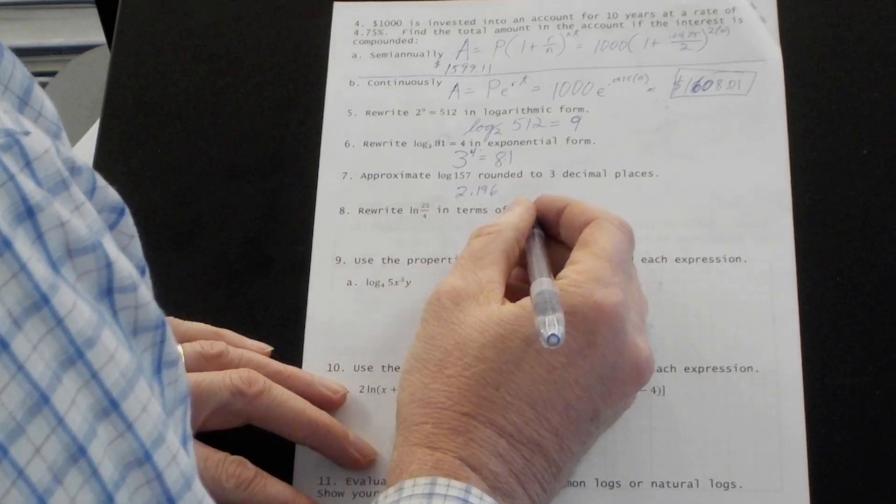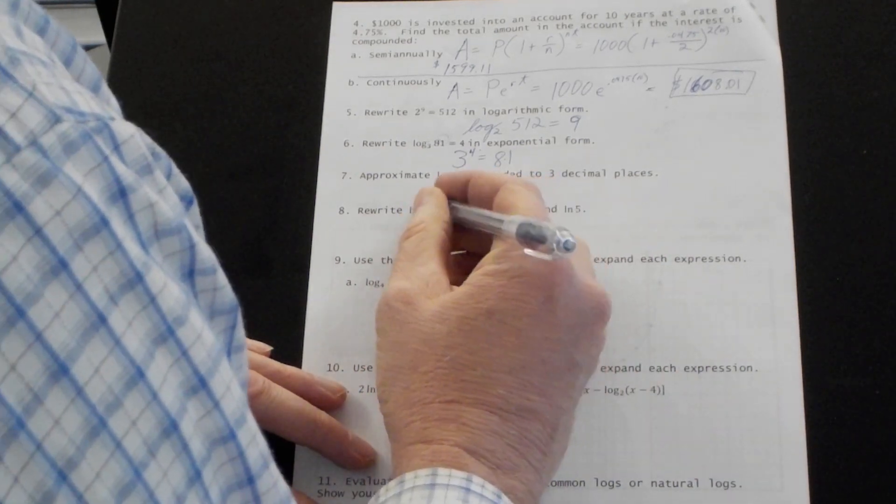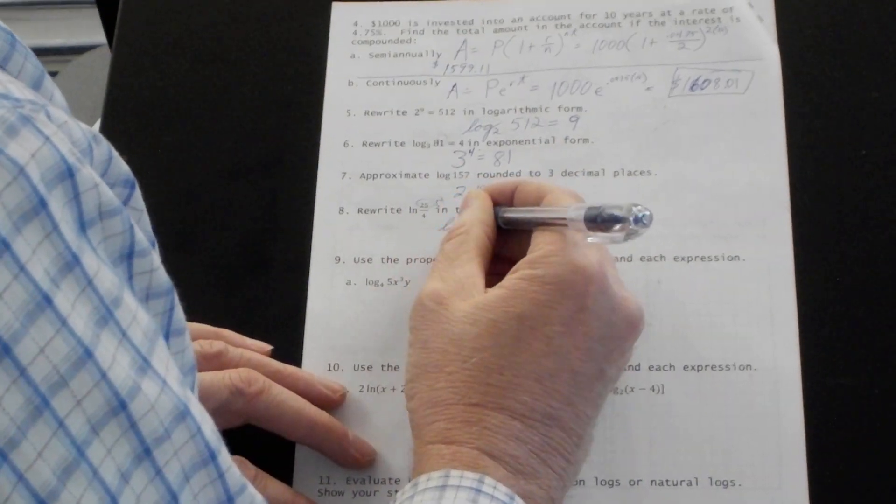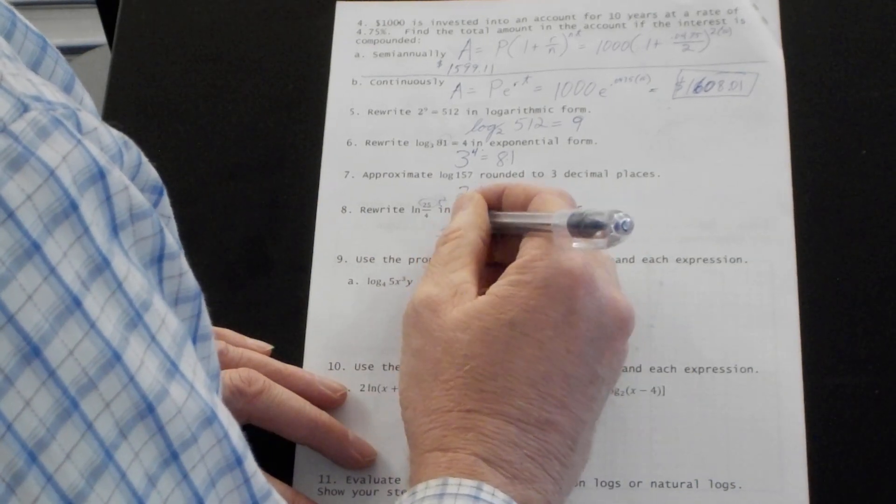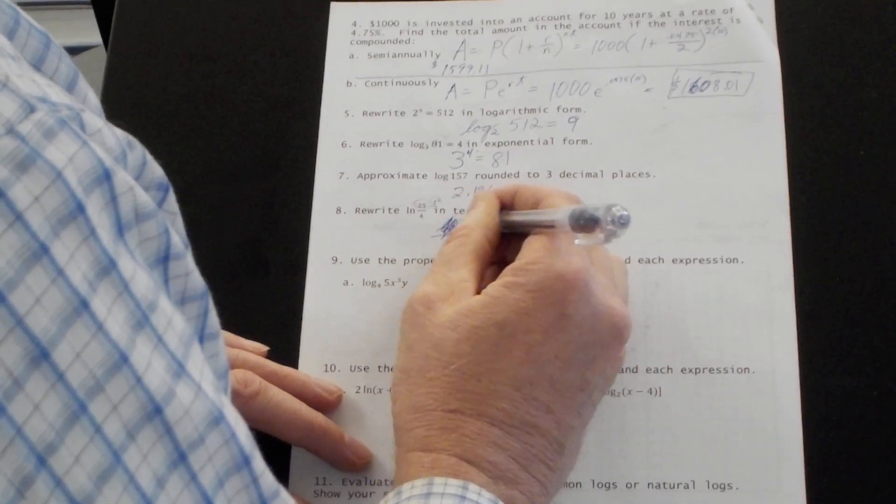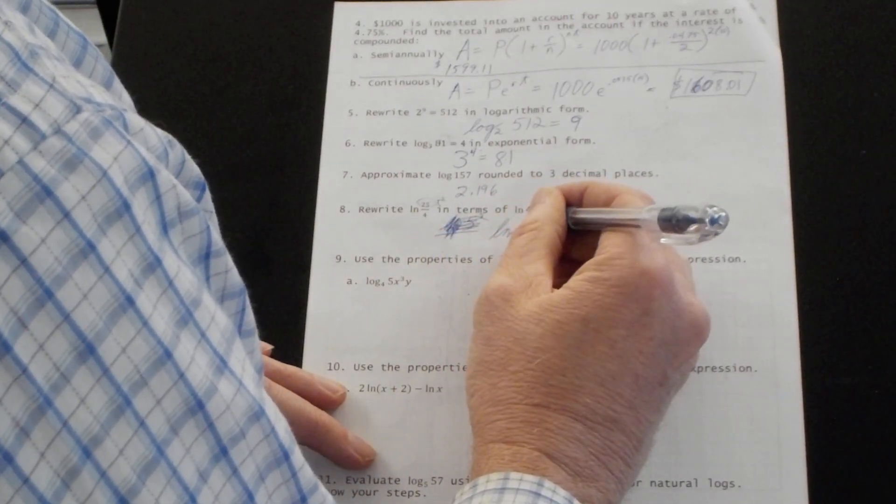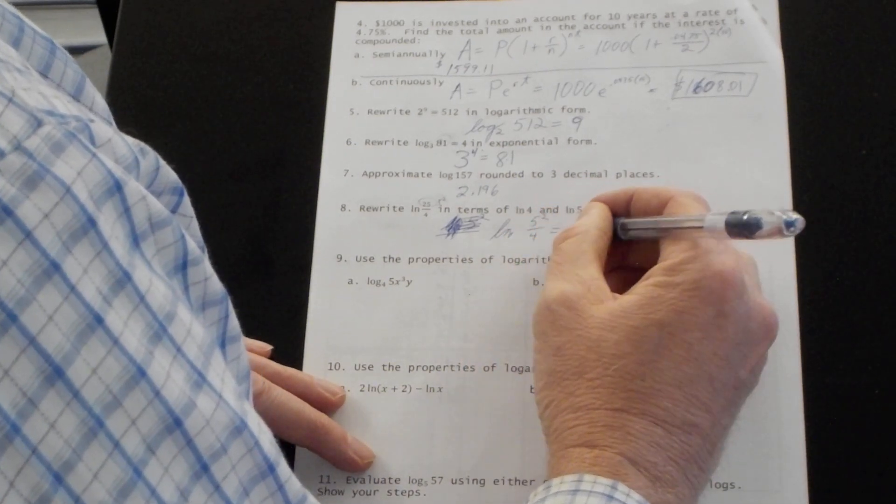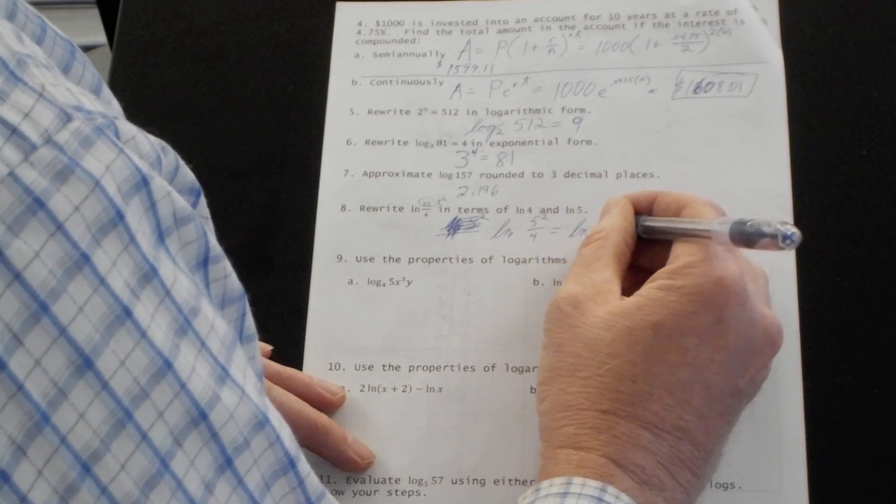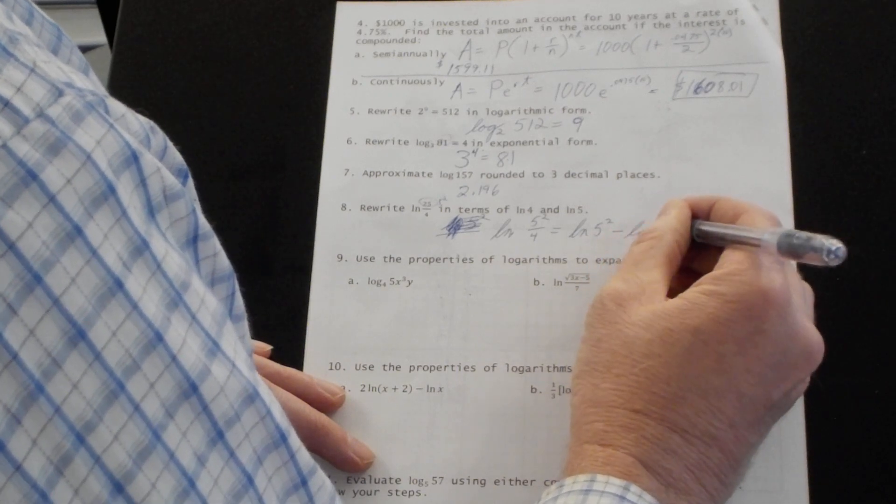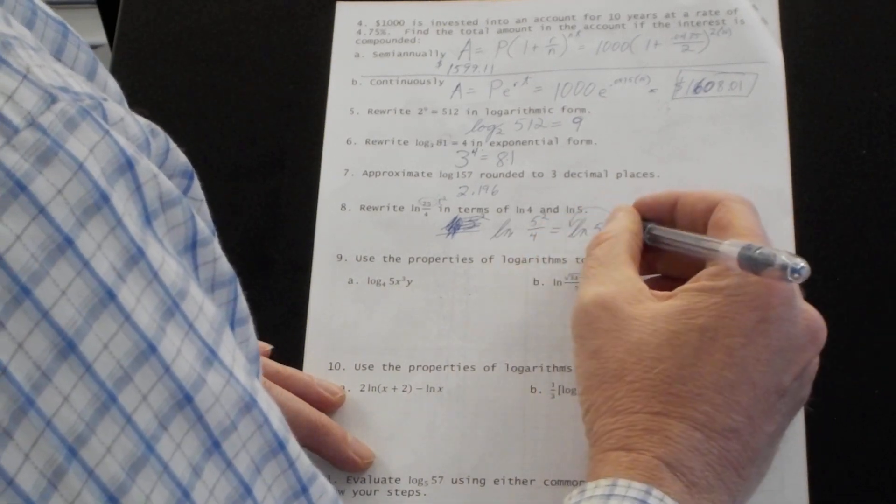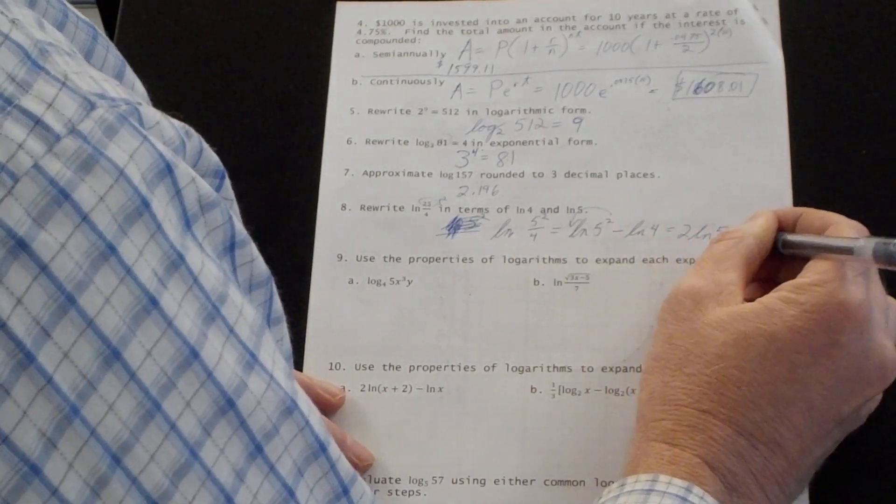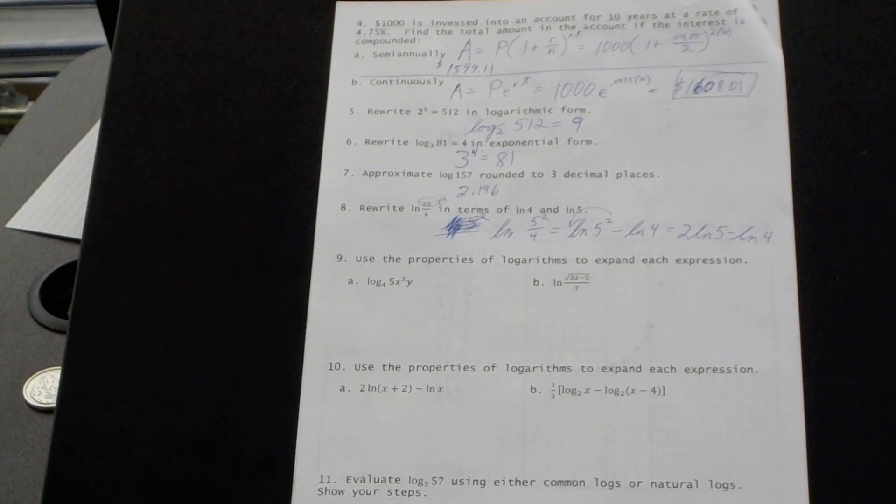Number eight. Natural log of 25 over 4 in terms of natural log of 4 and natural log of 5. So I think the one thing we need to do is change 25 to 5 to the second power. So natural log of 5 squared over 4. Let's use the division property. It says I can separate this into the natural log of 5 squared minus the natural log of 4. And then you have this power property because we want it in terms of just natural log of 5. So that's 2 natural log of 5 minus natural log of 4.